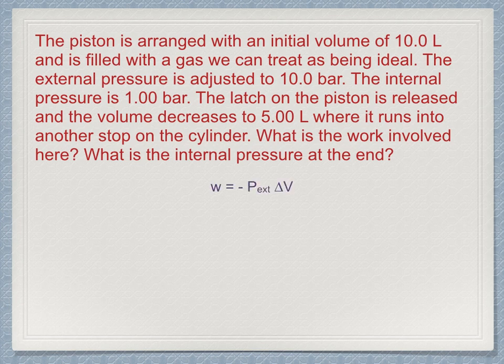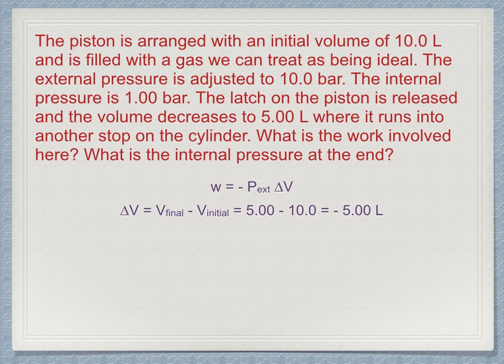The equation for calculating work is W equals minus P_external times delta V. The change in volume, delta V, equals the final volume minus the initial volume, or 5 minus 10, which is minus 5 liters. Delta V is negative because the system volume decreases. Substituting in, W equals minus 10 bar times minus 5 liters, or plus 50 liter-bars.